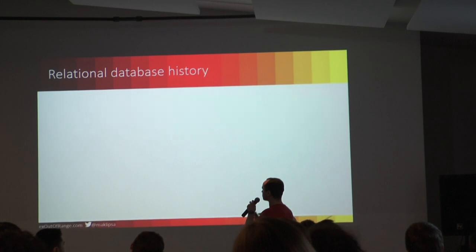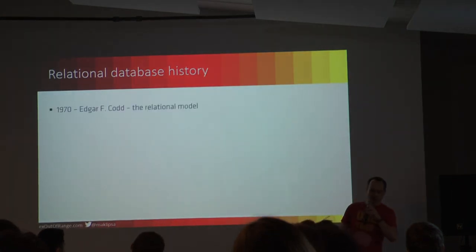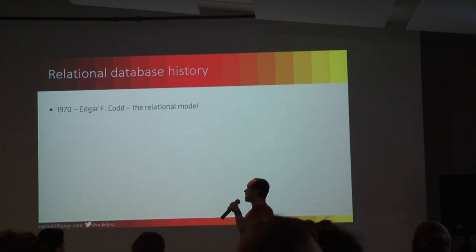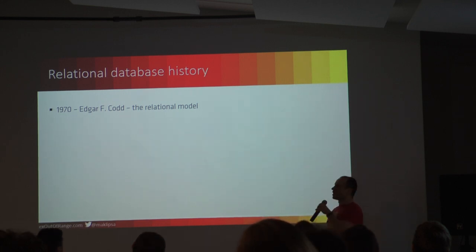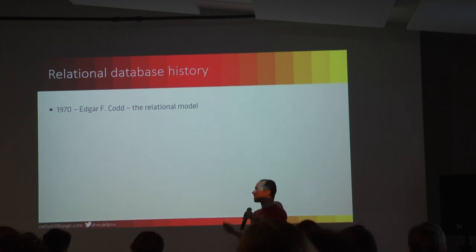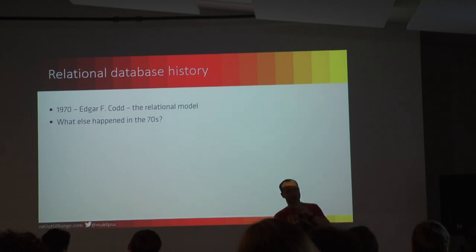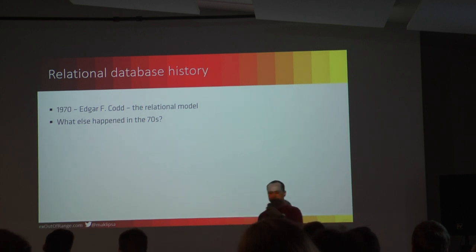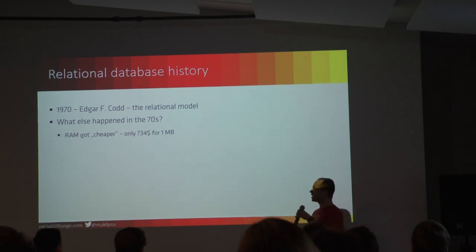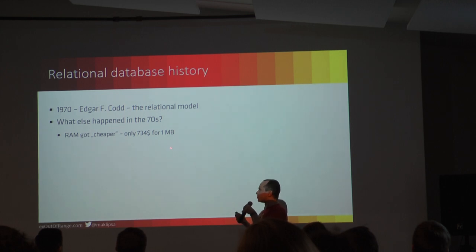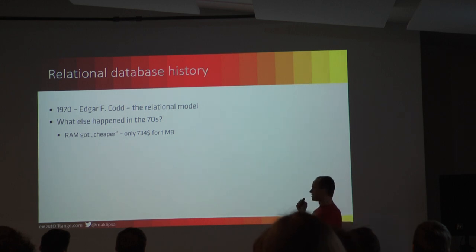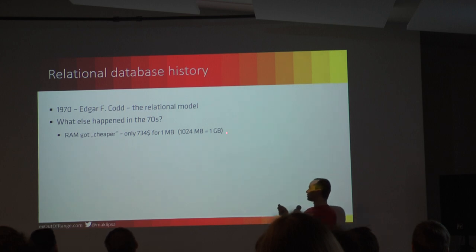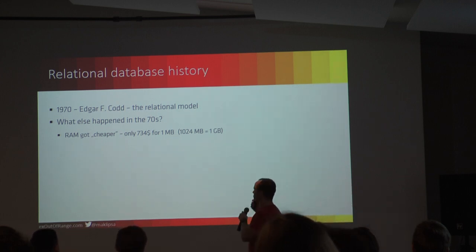Let's look at some history. The story of relational databases came to life as a piece of paper. In 1970, Edgar Codd wrote a paper describing how he sees the relational model. To understand why this paper had such success and why we are still using those databases, let's see what else happened in the 70s. Basically, storage got quite cheap — because two years earlier, we would be paying more than two and a half thousand bucks for one megabyte.